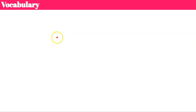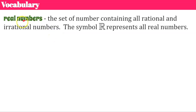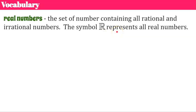Let's review some vocabulary. Real numbers are the set of numbers containing all rational and irrational numbers. The symbol R — which usually has two lines on the back of the R — represents all real numbers. This includes an infinite amount of numbers because the set of real numbers is not finite.